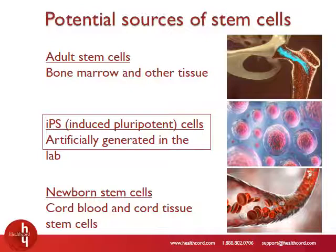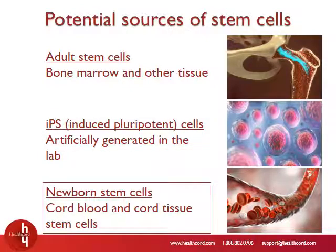iPS cells have contributed to revolutionary discoveries involving stem cells in the lab. However, the safety and efficacy of using them for cell therapy remains to be established. Last but not least, we come to newborn stem cells, which refer to stem cells from cord blood and cord tissue. The main limitation here is that newborn stem cells can only be collected at birth.